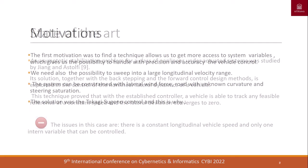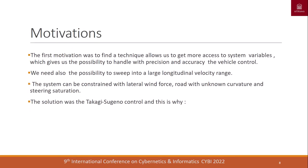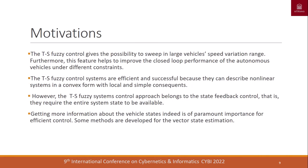Based on the state-of-the-art review, the first motivation was to find a technique allowing more access to the system state, the possibility to sweep into a large longitudinal velocity range, and to constrain the system with lateral force, road curvature, and steering saturation. The solution was the Takagi-Sugeno (T-S) fuzzy model, because T-S fuzzy control gives the possibility to sweep into a large longitudinal velocity range, and T-S fuzzy control systems are efficient because they can describe nonlinear systems in a convex form.